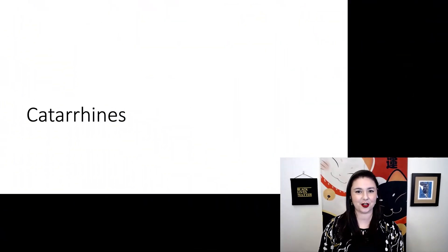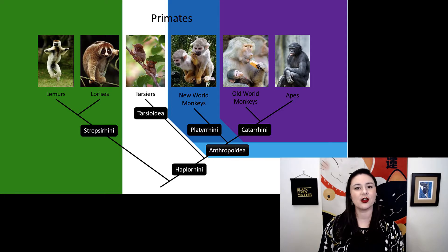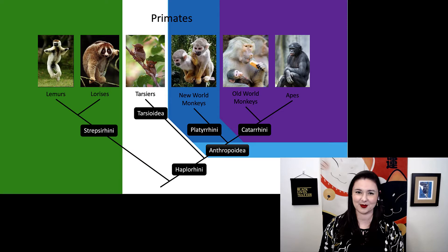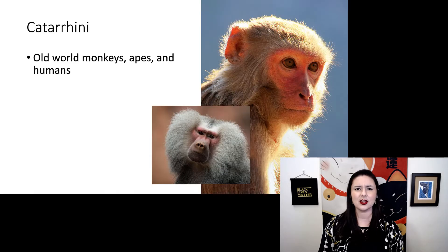Next, let's talk about our catarines. Going back to our tree here, catarines are one of the two groups within anthropoids. Here we have our old world monkeys and apes. Within catarines, we do have two more groups: our cercopithecoids and hominoids, and let's talk a little bit more about these.